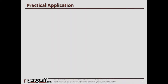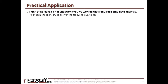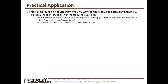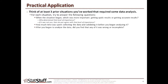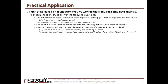Before we close this lesson, let's discuss how we can apply some of these concepts in a practical way. Think of three prior situations where you worked and had to do some sort of data analysis. For each situation, ask yourself: when the situation began, which was more important — getting quick results or getting accurate results? Who determined that level of importance, and do you agree with it? How much time was spent collecting and validating the data before you began analyzing it? And after you began to analyze the data, did you find any of it was wrong or incomplete? If so, how much extra time was spent recollecting and revalidating that data, and how much time could have been saved by more thoroughly collecting and validating it the first time?